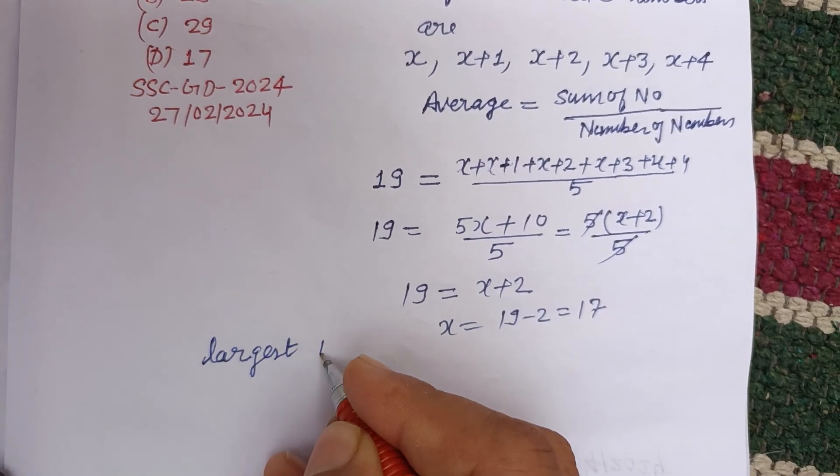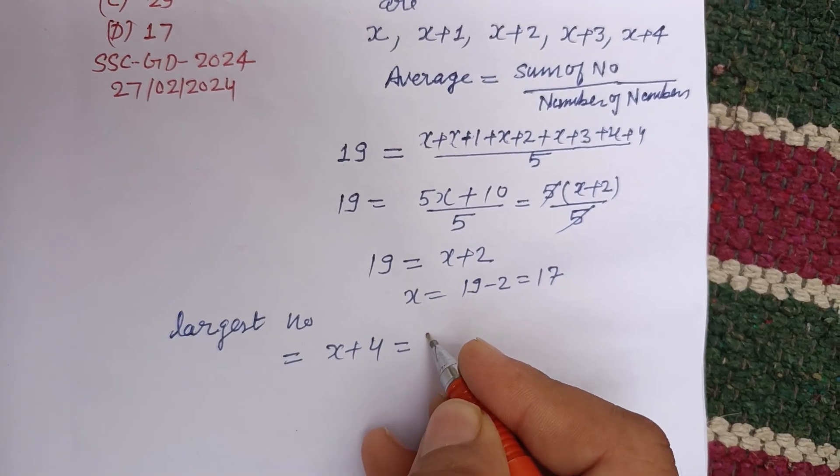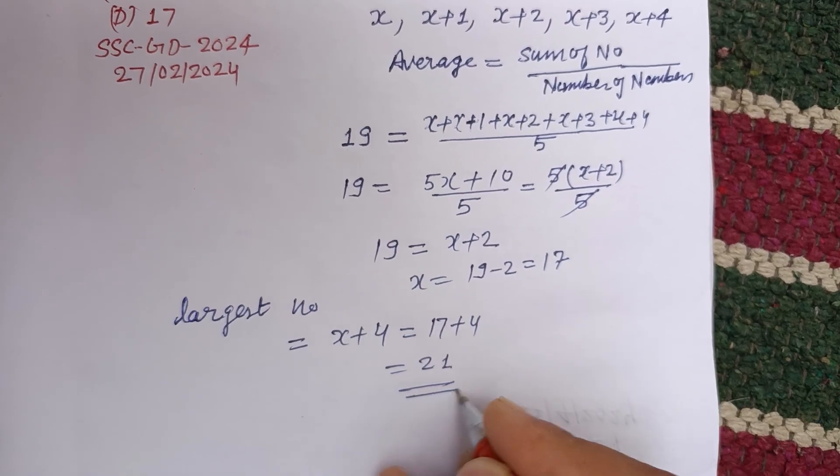The largest number is x plus 4. So x is 17, 17 plus 4, this is 21. So 21 is the largest number among the given numbers.